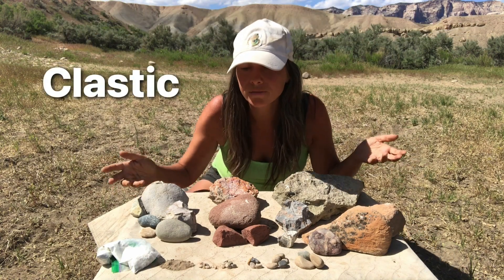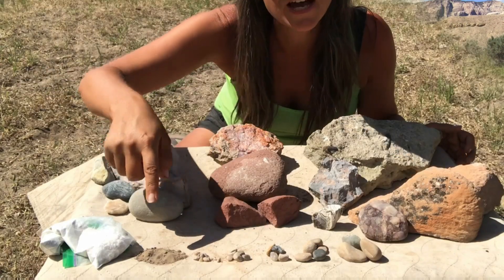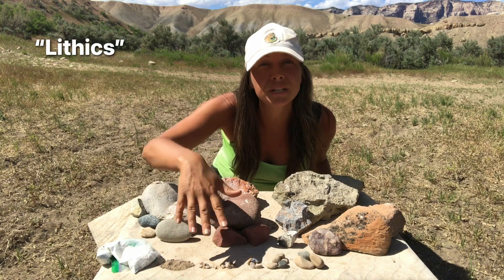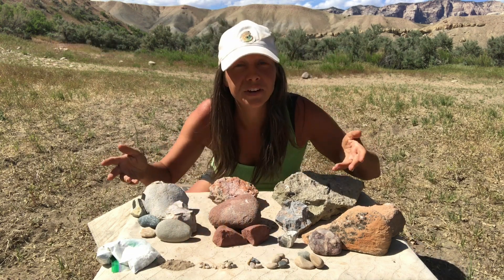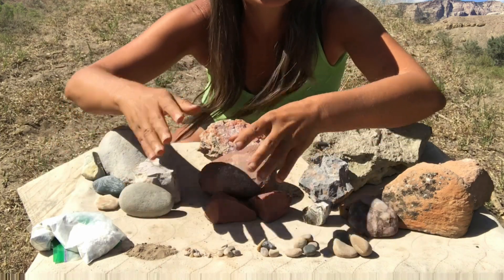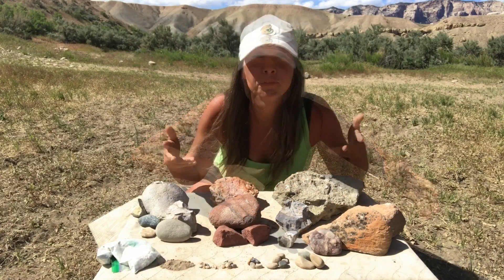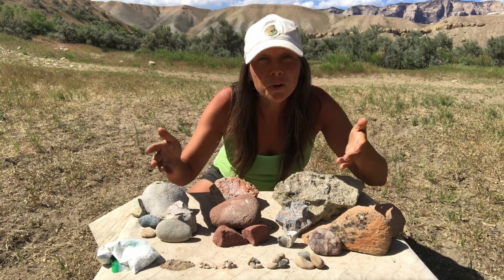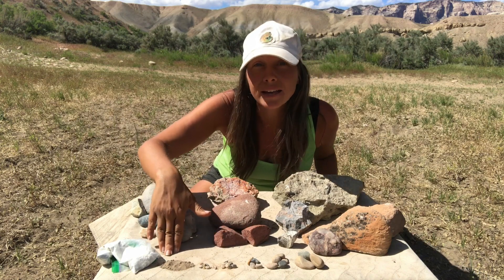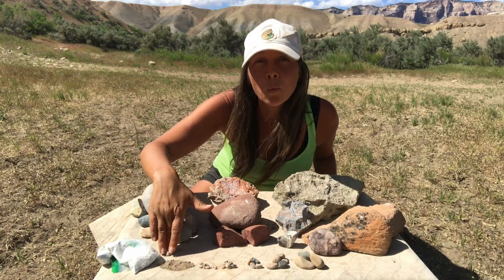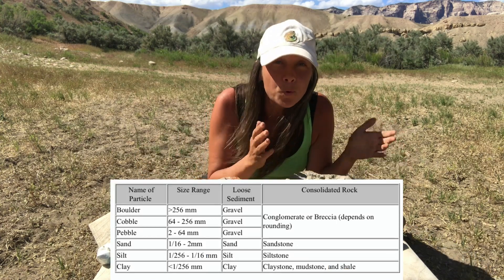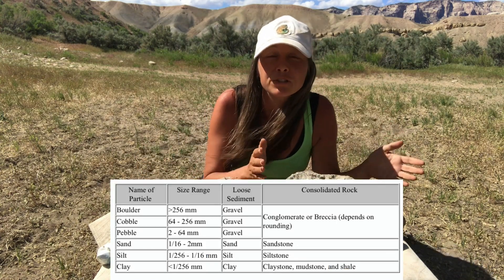Clastic sedimentary rocks are made up of clasts, or grains, of different sizes. The term lithics refers to the broken pieces of pre-existing rock. These grains vary all the way from the finest silts and clays, to the sands, to pebbles, cobbles, and boulders. Silts are defined as less than 1/256th of a millimeter, and boulders would be defined as more than 256 millimeters in size.